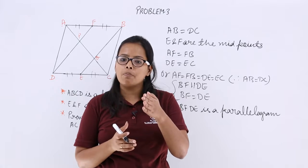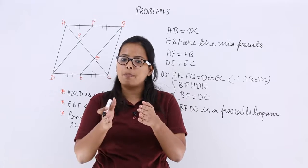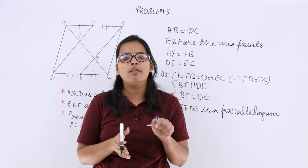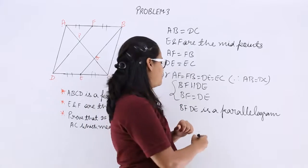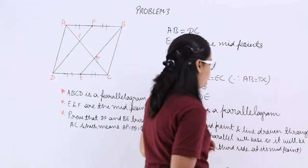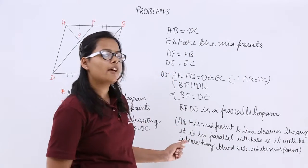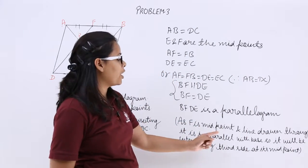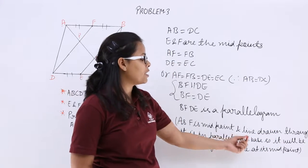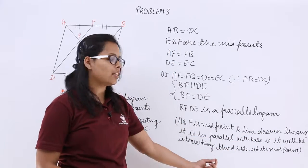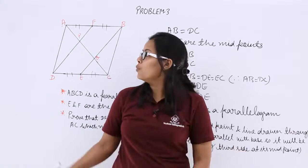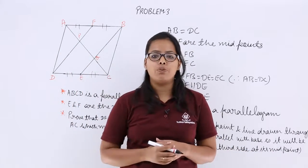This has been proved in the theorem under triangles: when a line has been drawn from the midpoint parallel to the base, it will be intersecting the third line at the midpoint itself. As F is the midpoint and a line drawn through F is in parallel with the base, it will be intersecting the third side at its midpoint. So P is the midpoint of AQ.